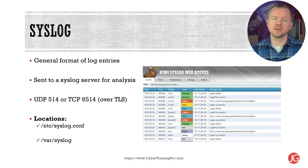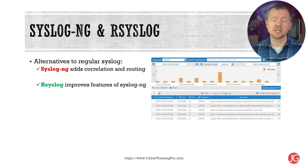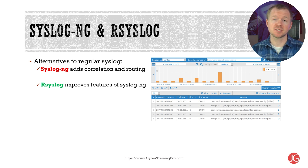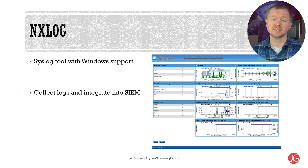Two alternate tools for the standard syslogd are syslog-ng, which adds capabilities like correlation and routing, and rsyslog, which improves upon syslog-ng's features. If you want a syslog tool that adds support for Windows logs, nxlog can be helpful and can also integrate into a SIEM system.